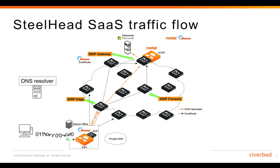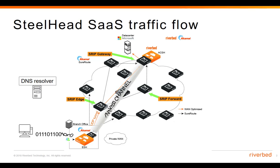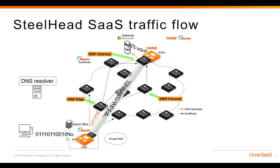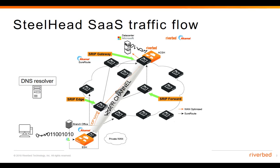We will have a connection between the user computer and the client-side Steelhead. We will have another connection between the Steelheads, which is called the inner channel. And at last, the connection between the Akamai Cloud Steelhead and the end server. From now on, the Outlook traffic for this user will be optimized by the Steelhead.